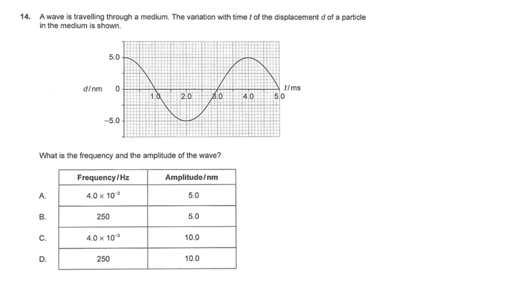Alright, so amplitude is the maximum displacement away from the equilibrium position. So in this case, it will be 5 nanometers. So the answer is not C or D.